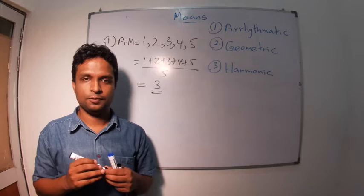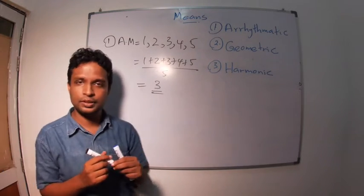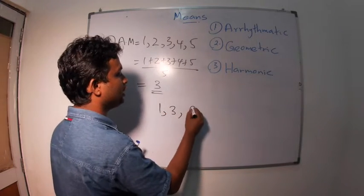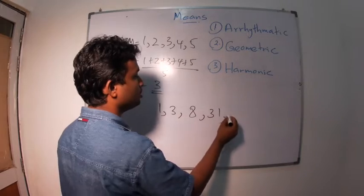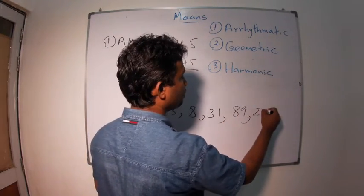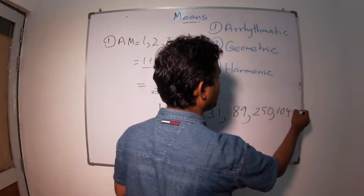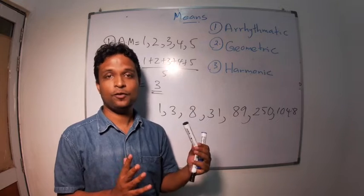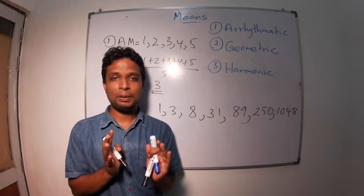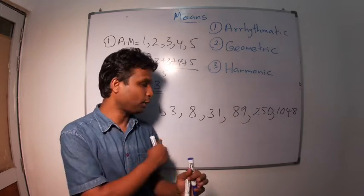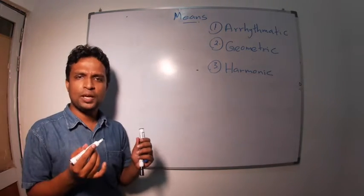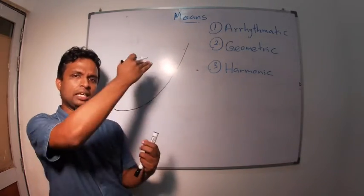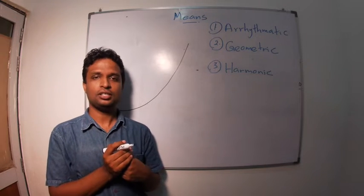But what will happen if the data series is like this: 1, 3, 8, 31, 89, 250, 1048. Exponential type data series. If we plot this, I hope that you can remember how to plot the frequency. So, let's plot this type of variable. The shape of this is like this. We call this type of curves as exponential curves.